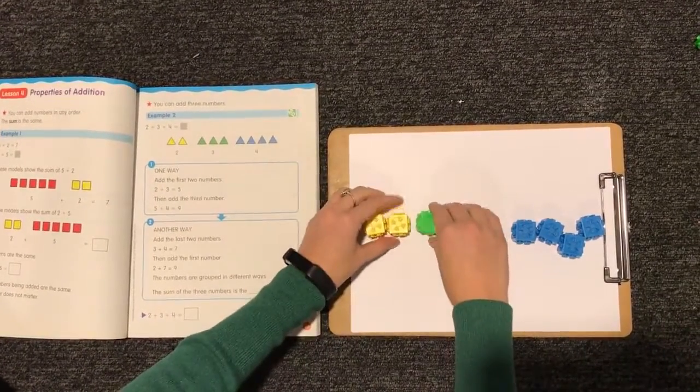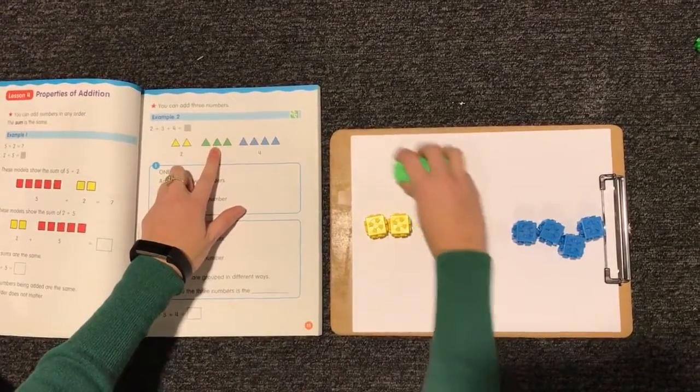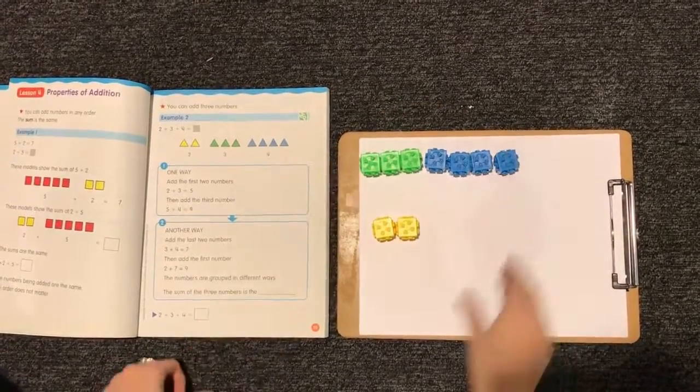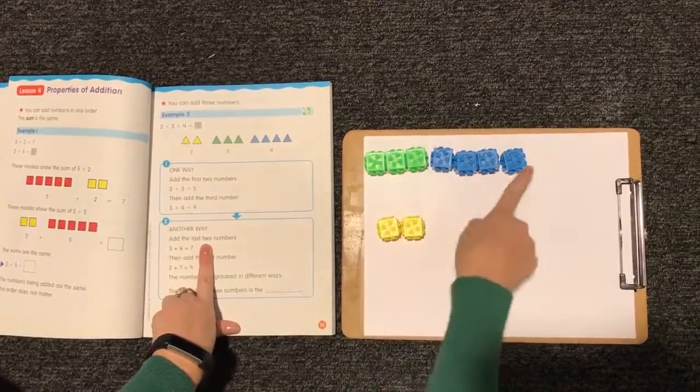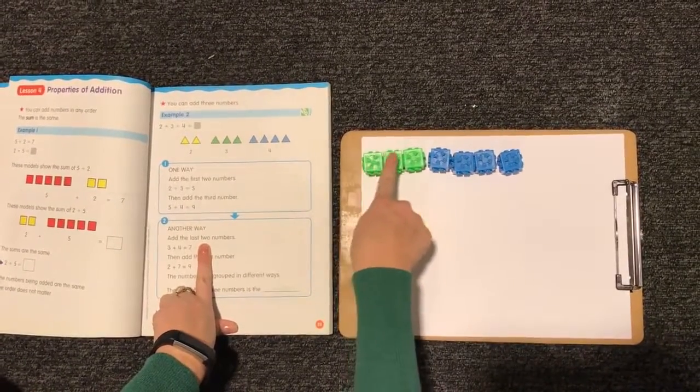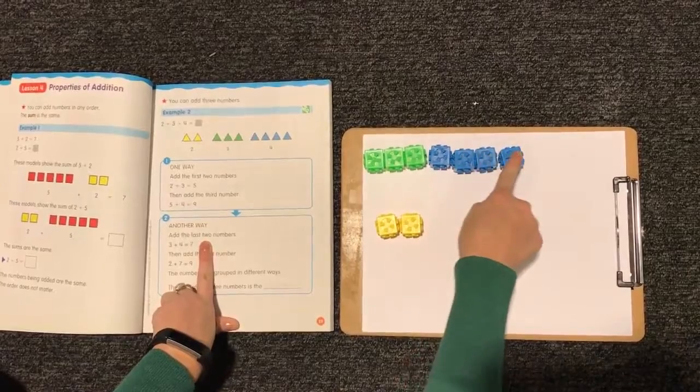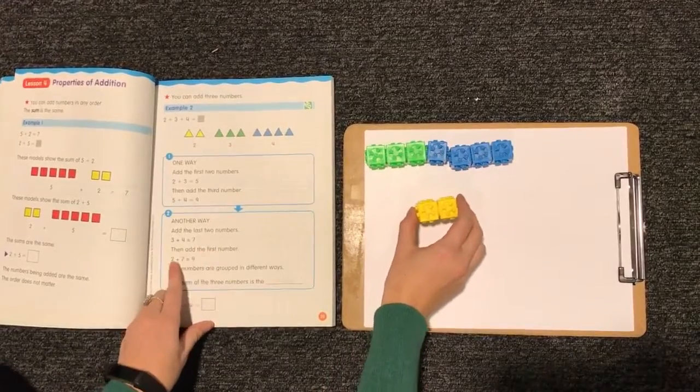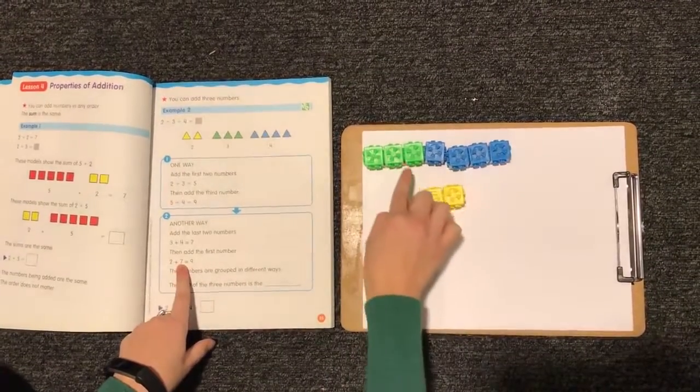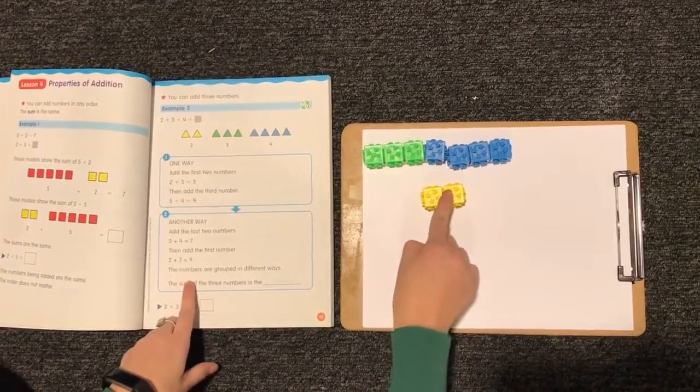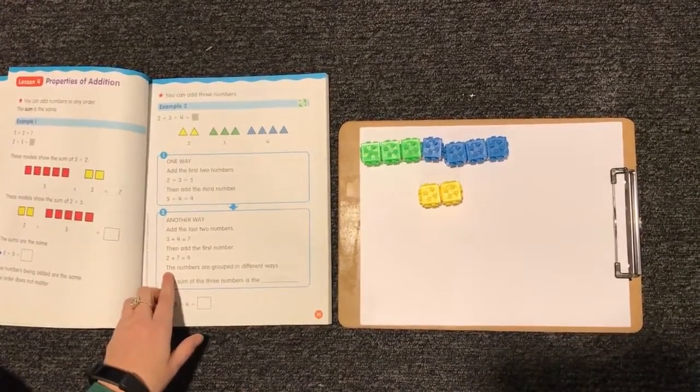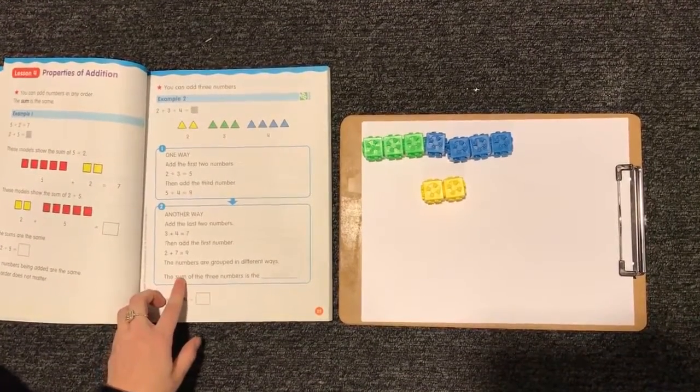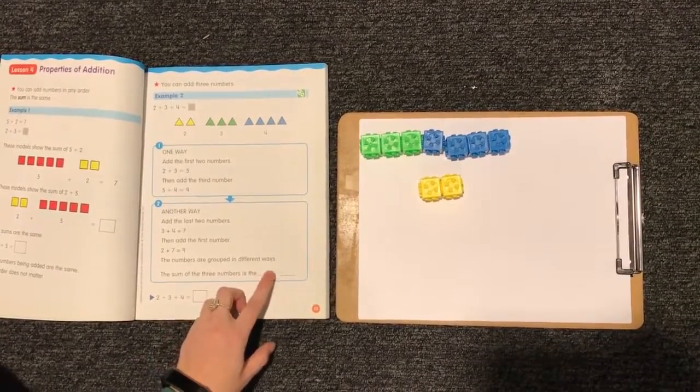Another way we could do this is start with our 3 and add our 4. So let's add those together first. 3 plus 4. 1, 2, 3, 4, 5, 6, 7. So we're going to start with our 7 and then add that first number we still have, 2 more. So 7, 8, 9. We still got that same number of 9.